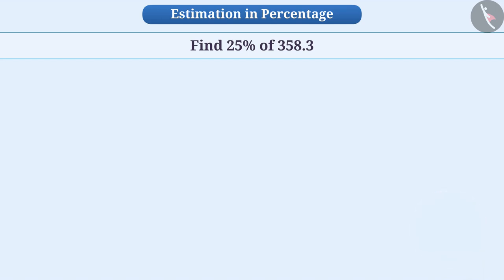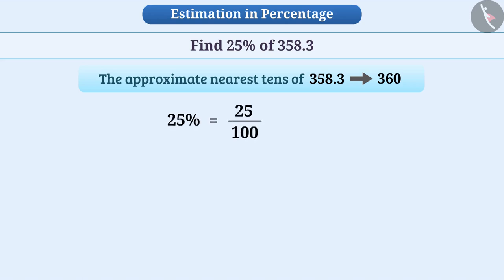Let me tell you, the approximate nearest tens of 358.3 is 360. 25% means 25 by 100, that is 1 by 4. In this way, 25% of 360 means the fourth part of 360, that is 360 divided by 4, that is 90.